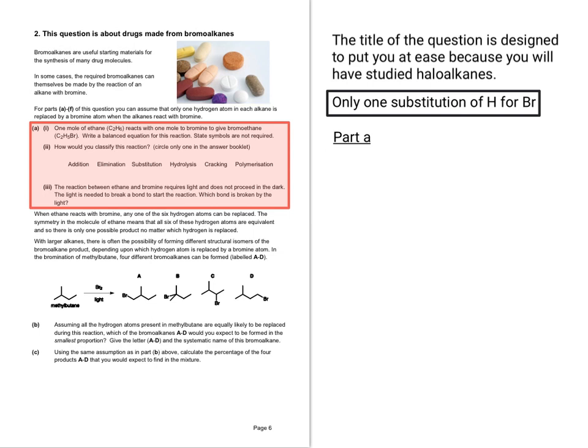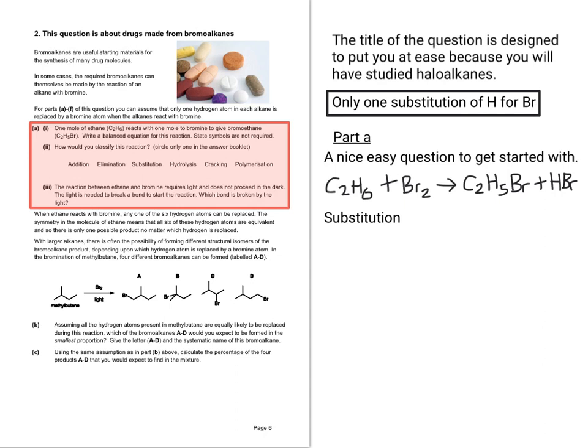It says for part A to F of this question, you can assume that only one hydrogen atom in each alkane is replaced by a bromine atom. In part A, one mole of ethane reacts with one mole of bromine to give bromoethane. Write a balanced equation for this reaction. So the reaction between ethane and bromine requires light. The light is needed to break the Br-Br bond, which is the initiation step.